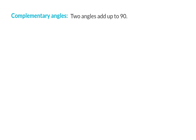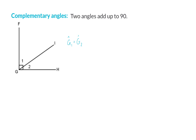The next definition that you need to know is that of complementary angles. Two angles that add up to 90 degrees are called complementary angles. As an example, in our sketch we have adjacent complementary angles because we know that angle G1 and G2 together form 90 degrees and they are adjacent to each other.